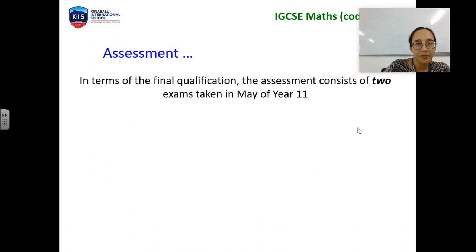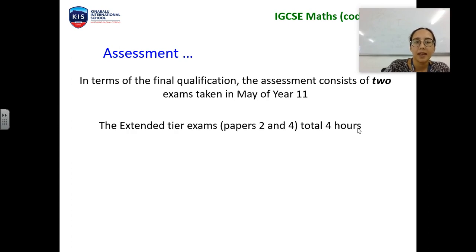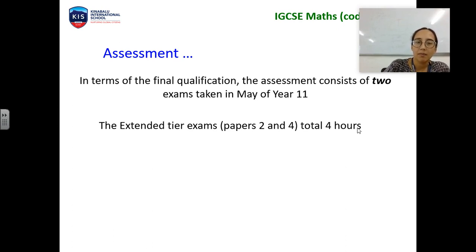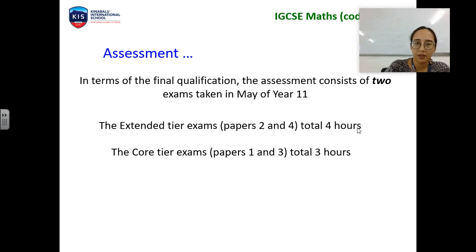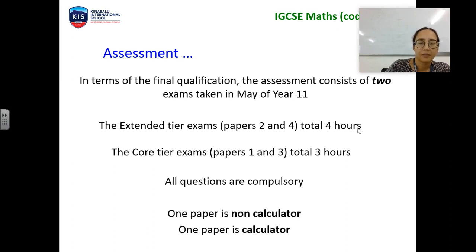At the end of the course you will sit two exams at the end of Year 11. The extended tier is two papers which are two hours each, a total of four hours. One paper will be calculator and one paper will be non-calculator.